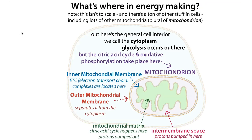Let's orient ourselves. When we talk about metabolism, a lot of it is going to be happening in the mitochondria, and some in the cytoplasm. Glycolysis happens in the cytoplasm. The citric acid cycle happens in the mitochondrial matrix — most of it in that inner chamber.